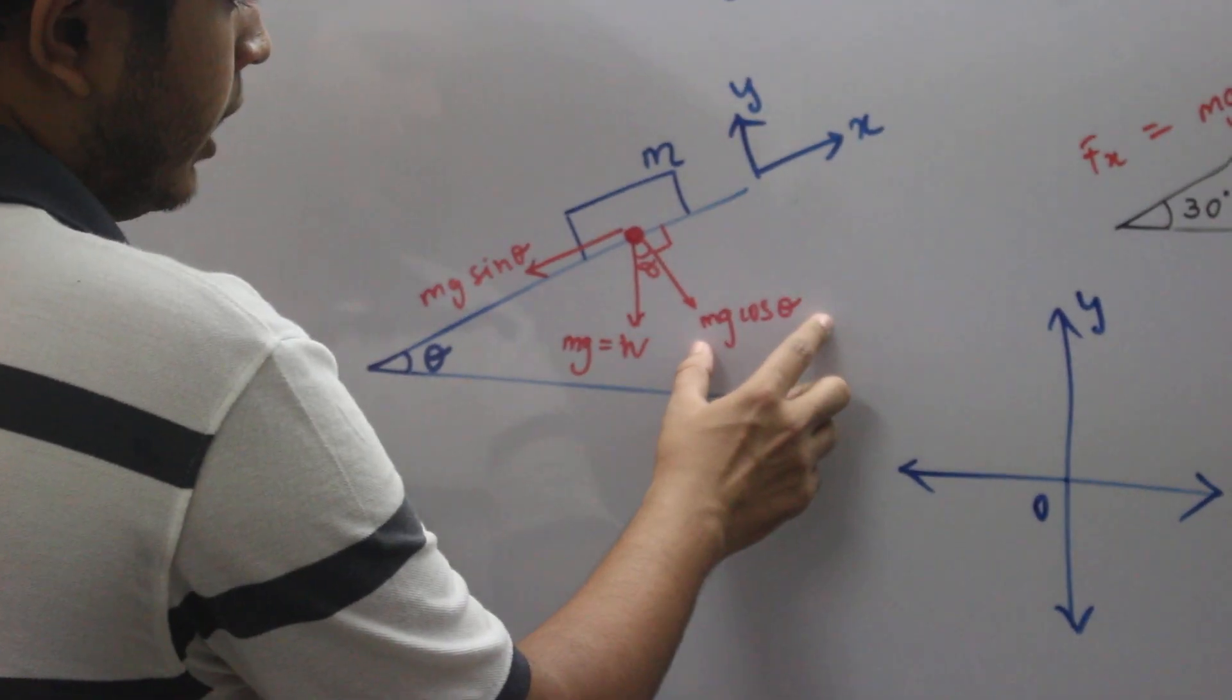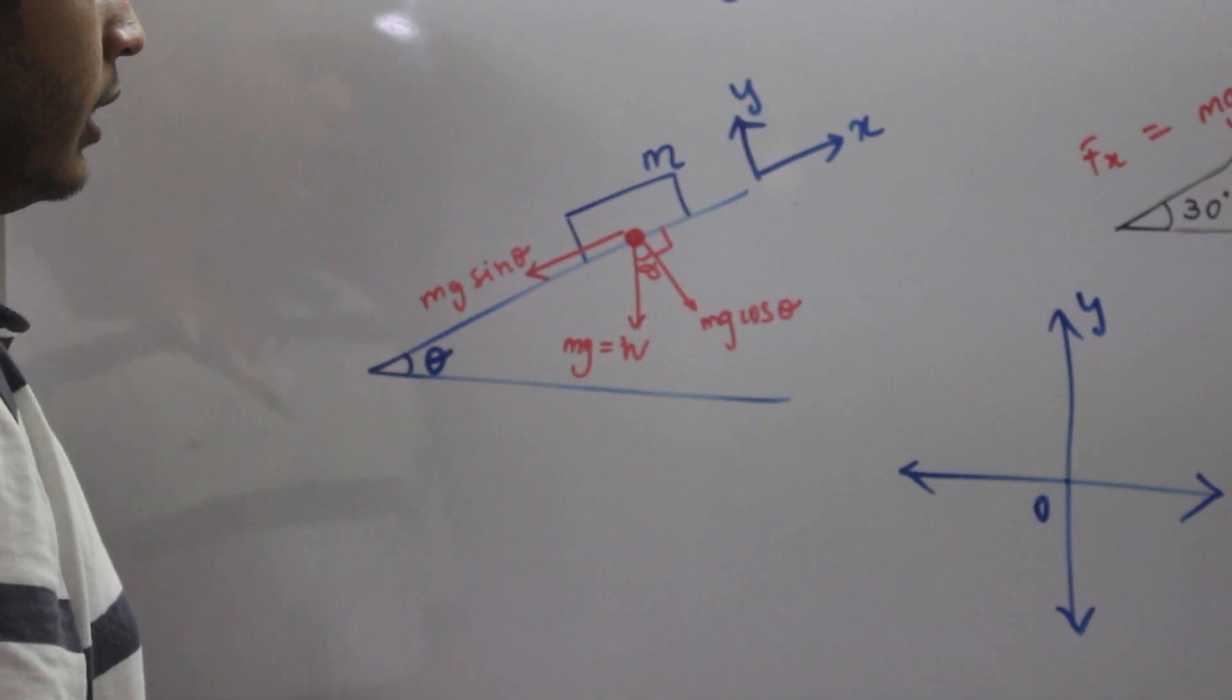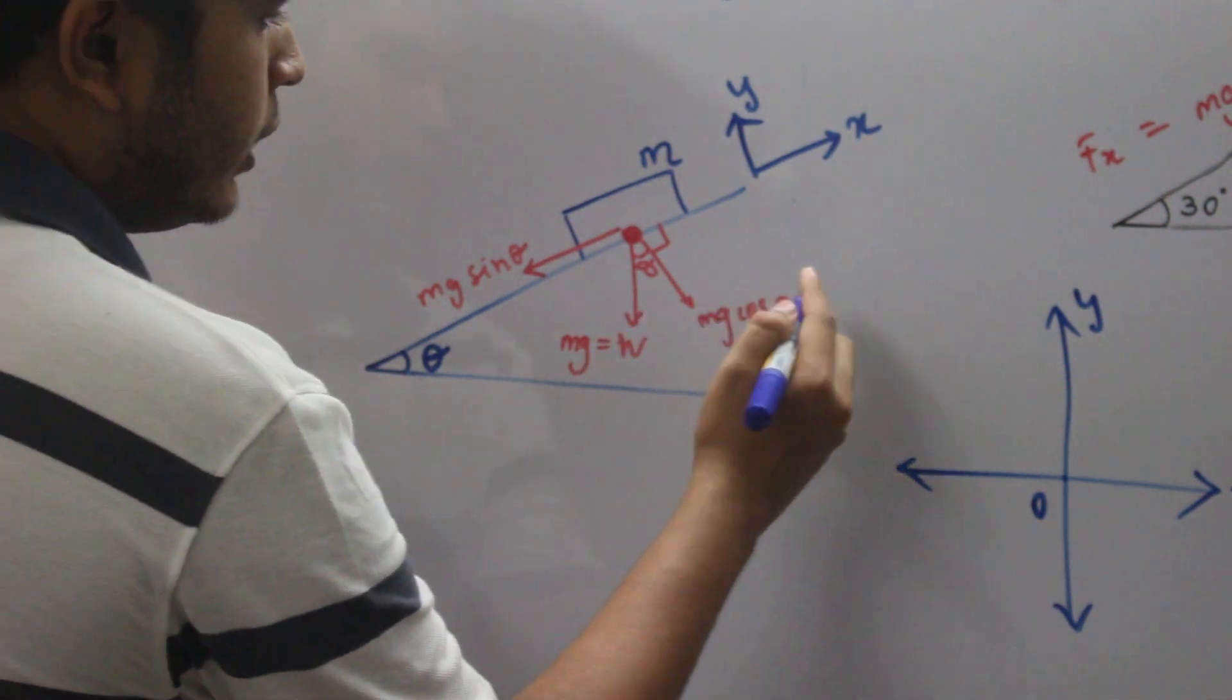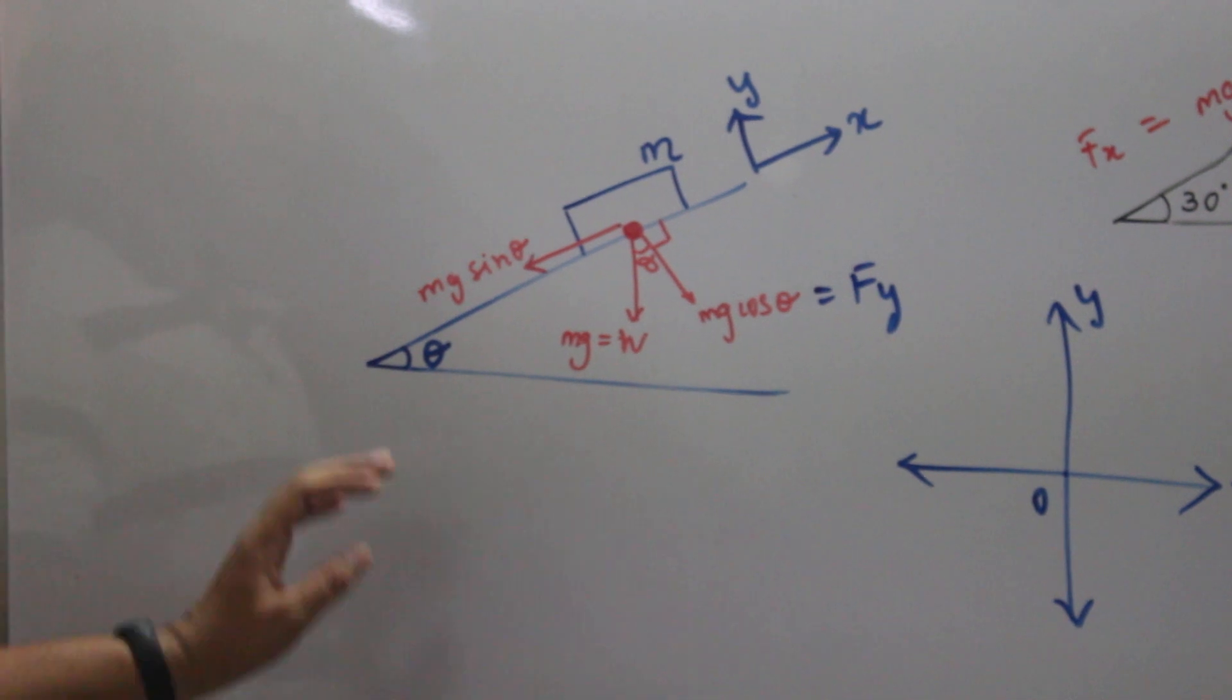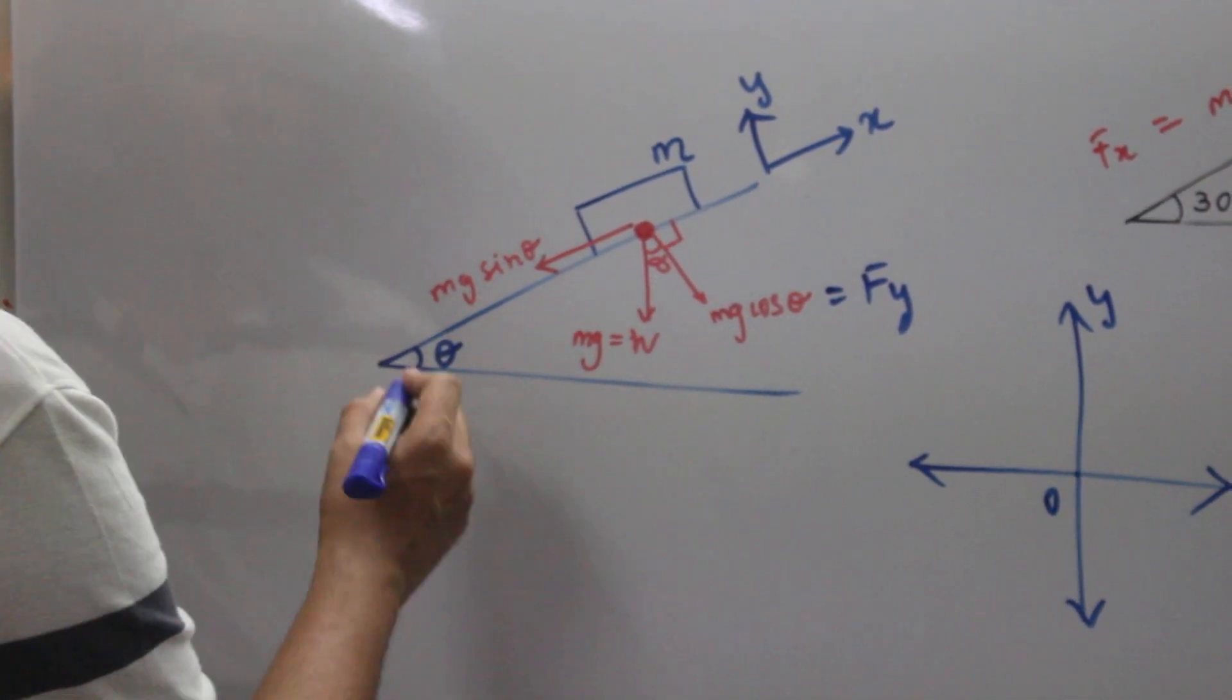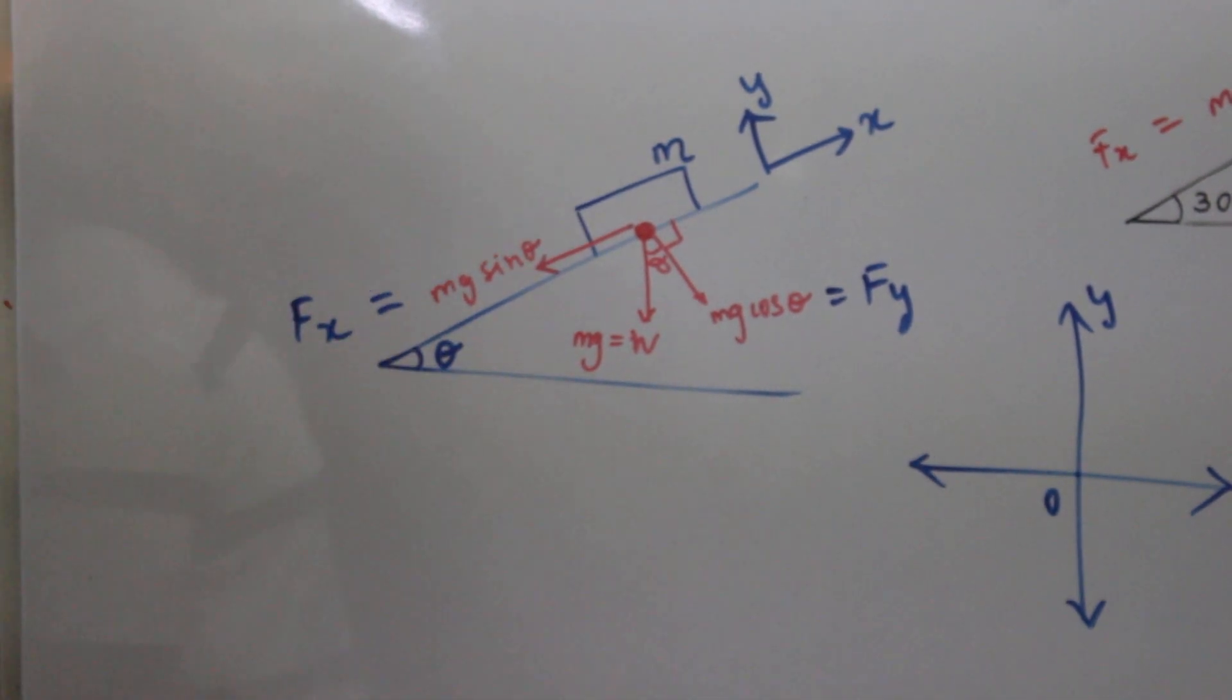Then mg cos theta. mg cos theta will act perpendicular to the inclined surface, that is in the negative y direction. That component will be given by f_y equals mg cos theta. And along the inclined surface you will get a component of mg sin theta. That will be your f_x. This happens in the case of an inclined surface.